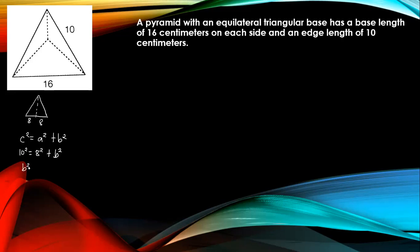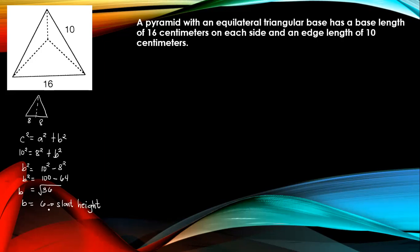So b squared is equal to 10 squared minus 8 squared. 10 squared is 100, and 8 squared is 64. So 100 minus 64 is equal to 36. Taking the square root of 36, we get 6. So 6 is our slant height.